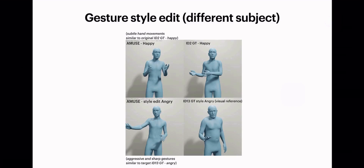We perform style transfer by combining a happy emotion sequence's content, generating a corresponding gesture at the top left, and merging it with the emotion latent vector from an angry speech sequence of a different subject, resulting in an angry gesture at the bottom left in the target subject's style.